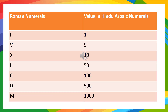I symbol means 1, V means 5, X means 10, L means 50, C means 100, D means 500, and M is for 1000.